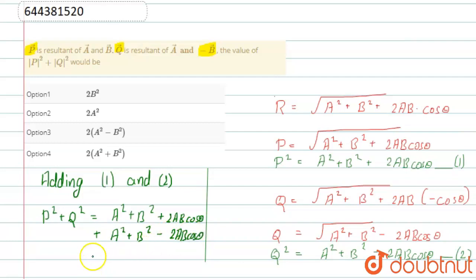And what we get finally is A square plus B square and this is two times, so this is our option 4. I hope you understood, thank you for watching.